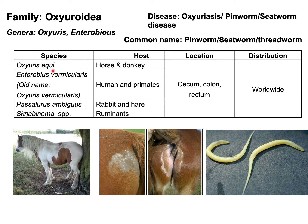The first species is Oxyurius equi, whose host is horse and donkey. The second is Enterobius vermicularis, previously called Oxyurius vermicularis, whose host is human and primates. All these parasites are located in the large intestine — that is, in the cecum, colon, and rectum.